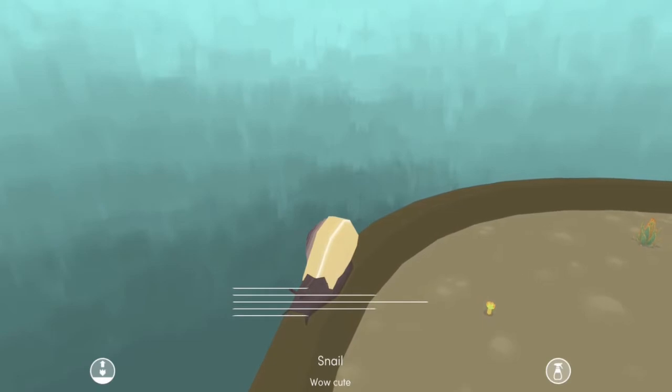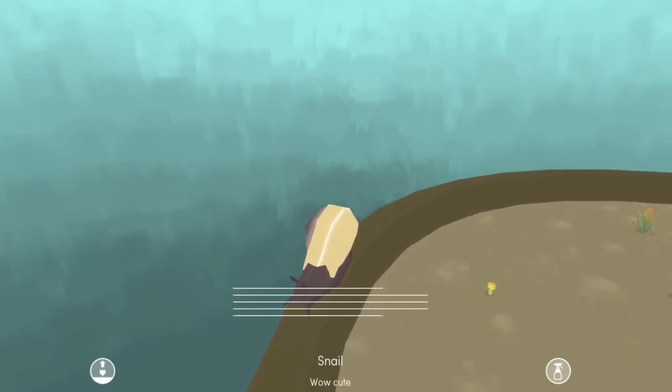You get snails on your plant pot that just mill around and you can sing to them for some reason. I called mine Stan Salad Keeper because why not?